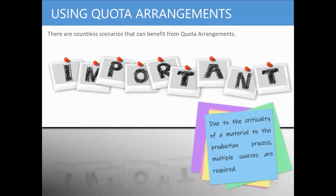For example, perhaps you have a material that is critical to the production process. In that case, perhaps you have more than one source of supply to ensure that you are never in a situation where that material is unavailable. But this is more than just having a backup supplier. In this example, you need to constantly procure the material from both suppliers, perhaps because your preferred supplier has a maximum capacity that is consistently less than the quantity needed to support production.